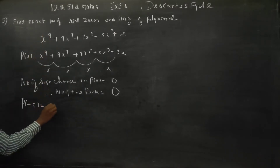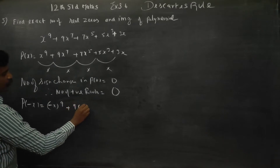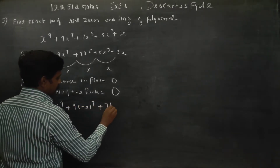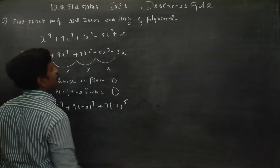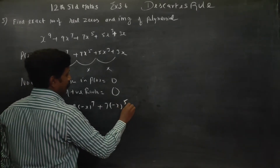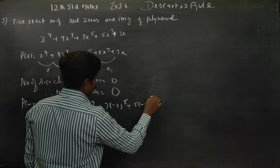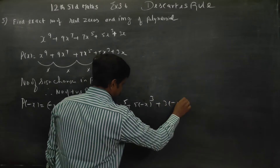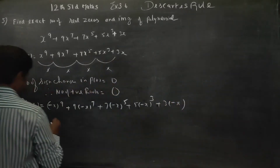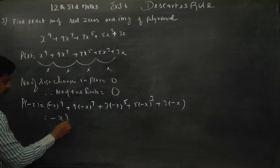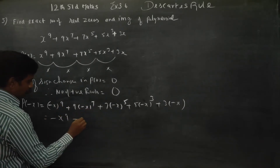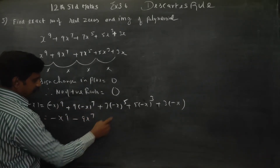Then p(-x): (-x)⁹ + 9(-x)⁷ + 7(-x)⁵ + 5(-x)³ + 3(-x). You will be getting minus x⁹ because this is odd, this is also odd — minus x⁷.